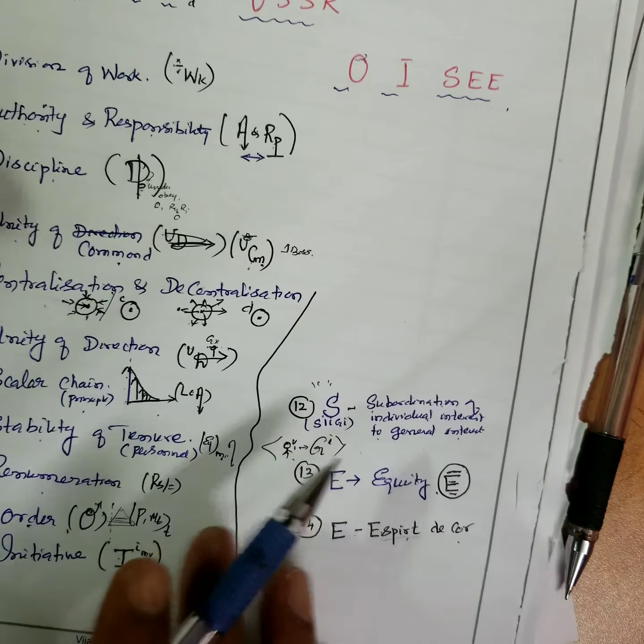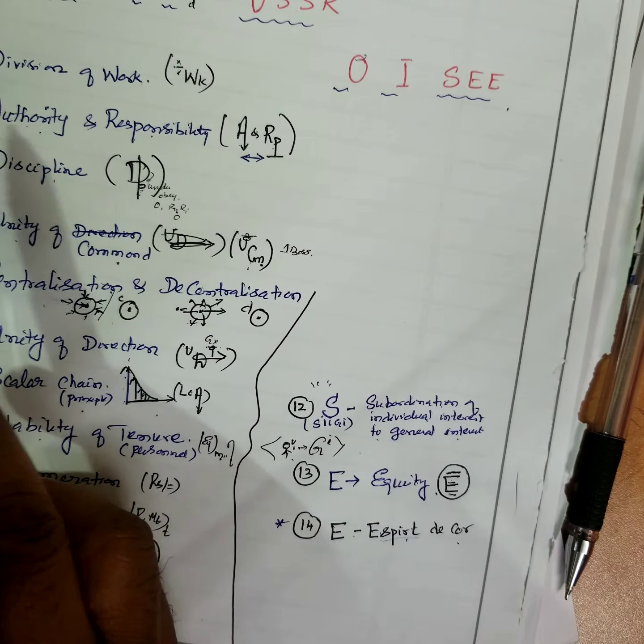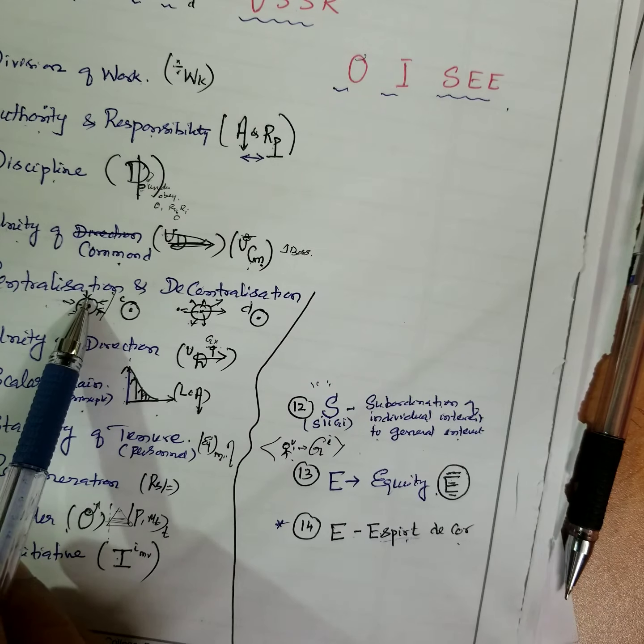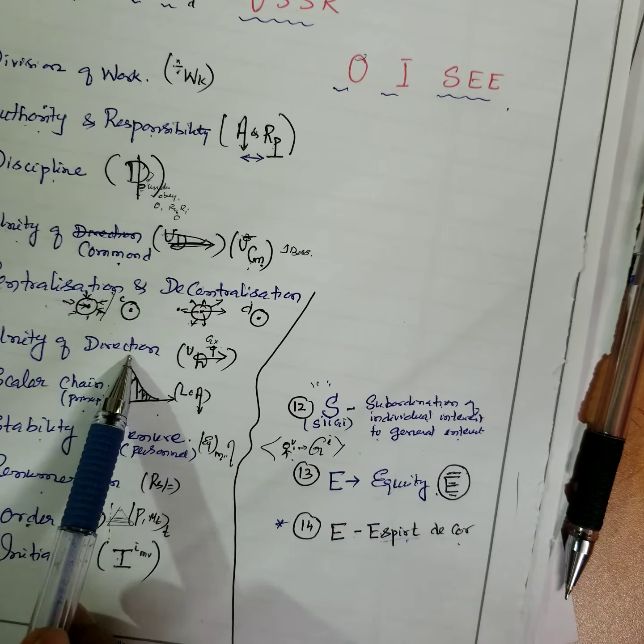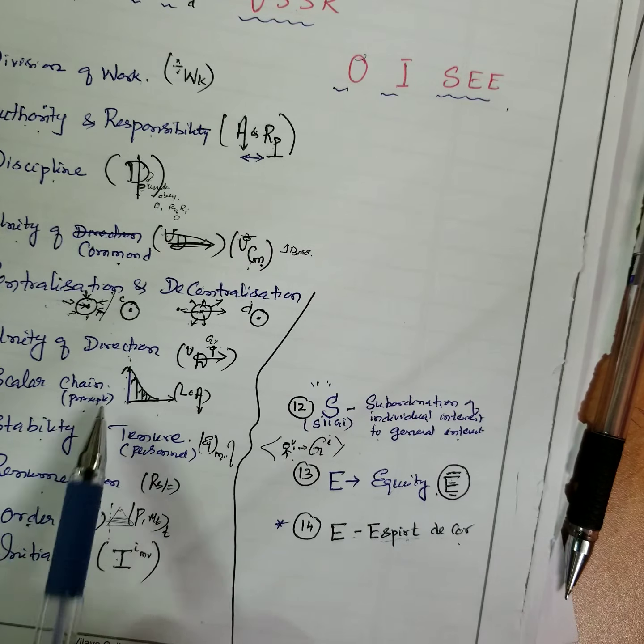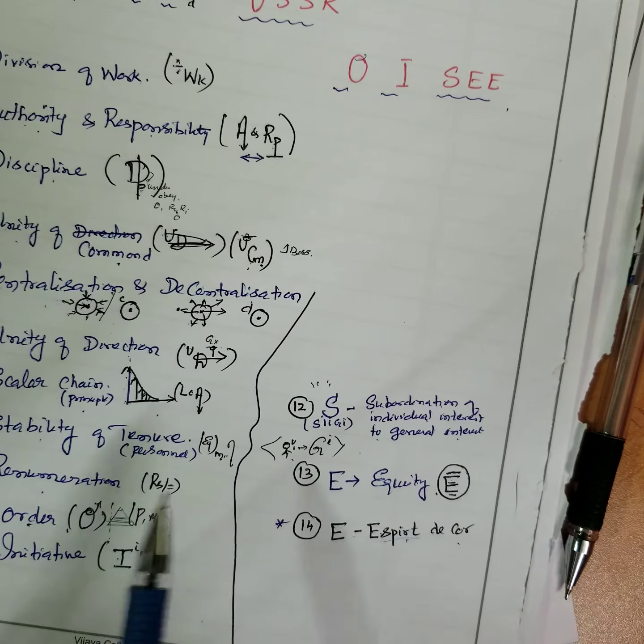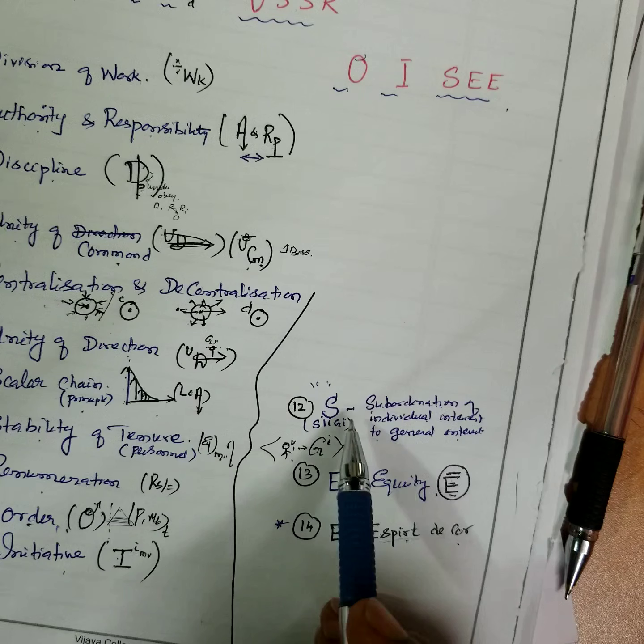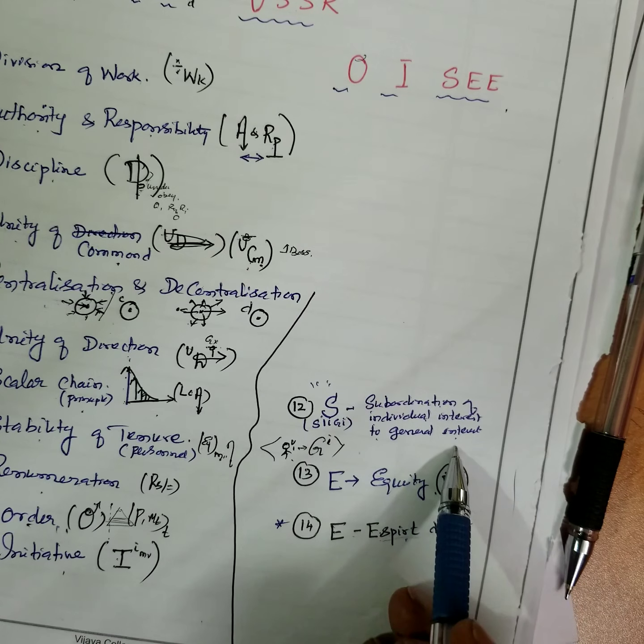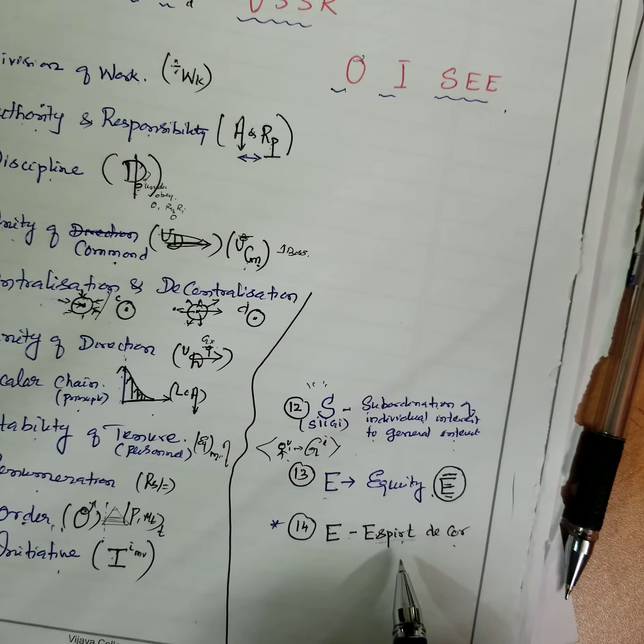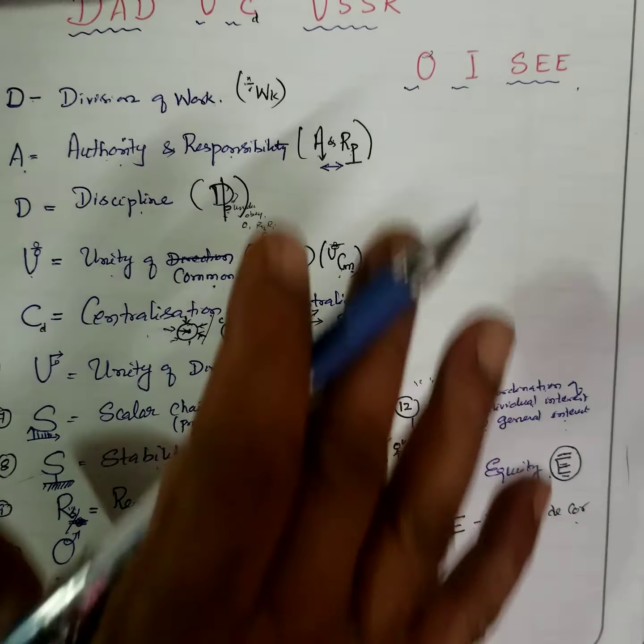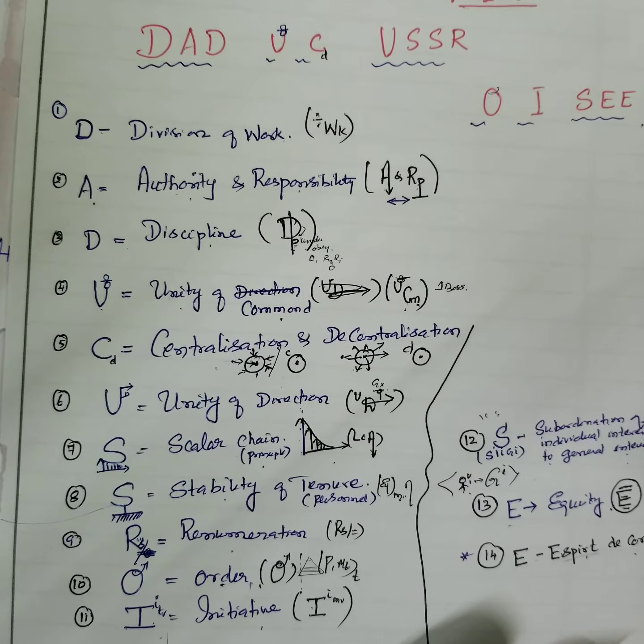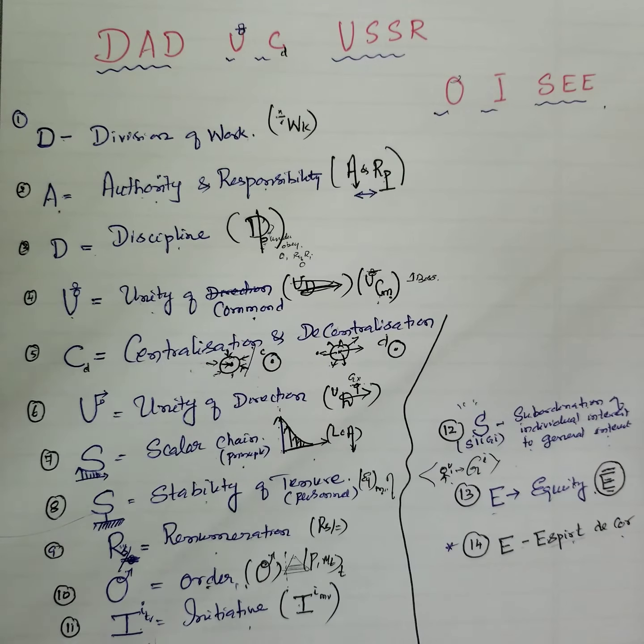Division of work, authority and responsibility, discipline, unity of command, centralization and decentralization, unity of direction, scalar principle, stability of personnel, remuneration, order, initiative, subordination of individual interest to general interest, equity, and esprit de corps. Four or five times you write it, then only you will remember. This is a very important question, and not only for MBA but everywhere throughout the world, they will ask this for all interviews.